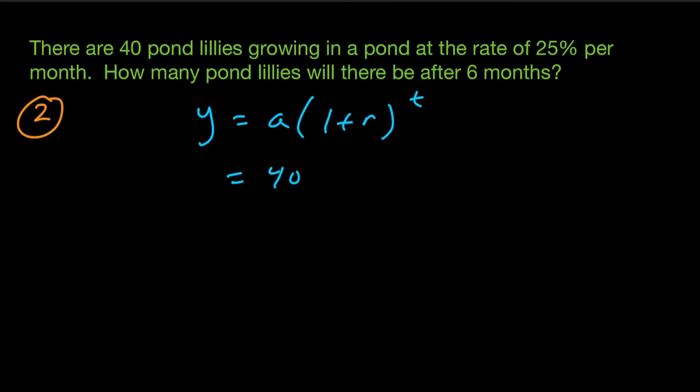Our starting amount is the 40 pond lilies. And 25%, we're going to move that decimal two places to the left. So that comes out to 0.25. And we want to find out how many pond lilies there will be after six months. We're going to use six. Now in this problem, everything was done in months. Like the rate of growth was 25% per month. The time was months.